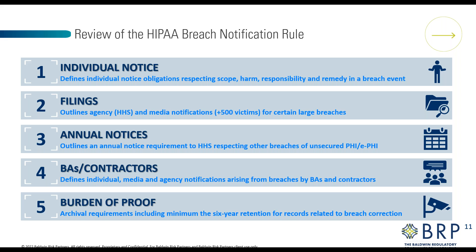In case of a breach of PHI, the breach notification rule explains obligations for individual notices regarding the scope, responsibility, form, and steps taken to remedy the breach event. It outlines required filings to HHS, and breaches affecting 500 or more individuals require media notifications. The covered entity must also provide HHS an annual notice for smaller breaches of unsecured PHI or ePHI, and must archive records of the breach and breach correction for a minimum of six years.